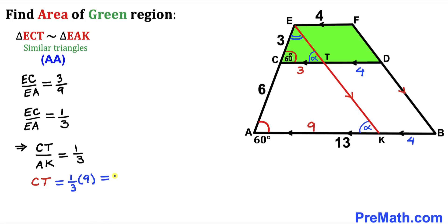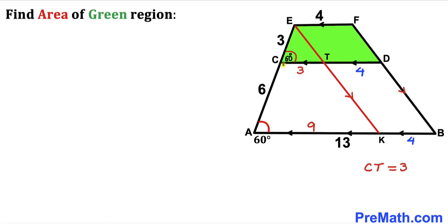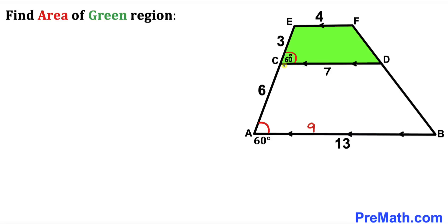Now we observe that segment CT is 3 units and segment TD is 4 units, so the whole side CD is 3 + 4 = 7 units. We have now determined the top side of the green trapezoid to be 7 units, and our next step is to calculate the height h.